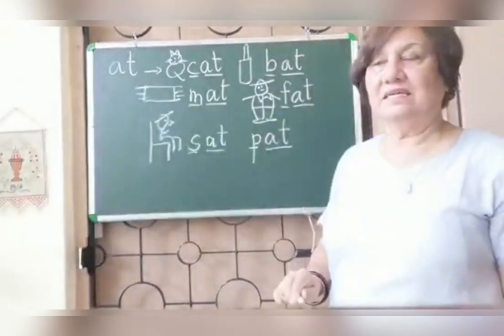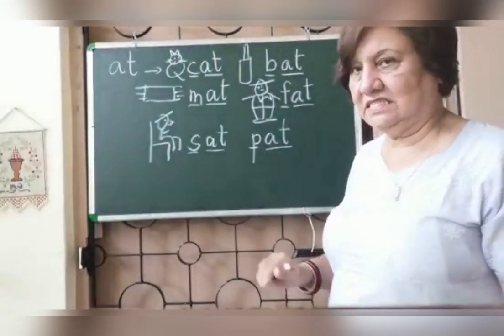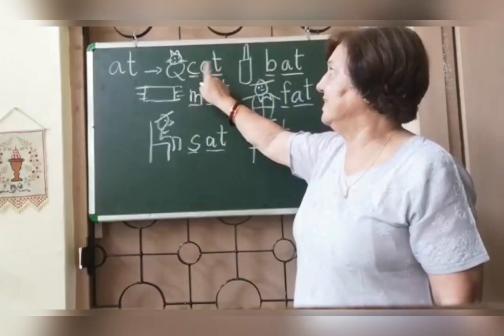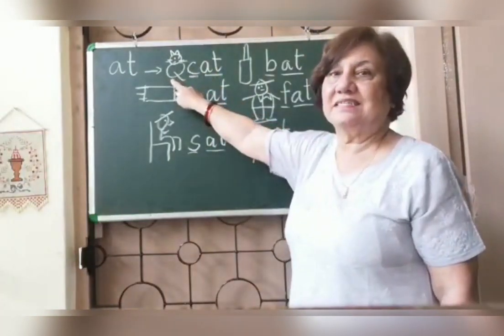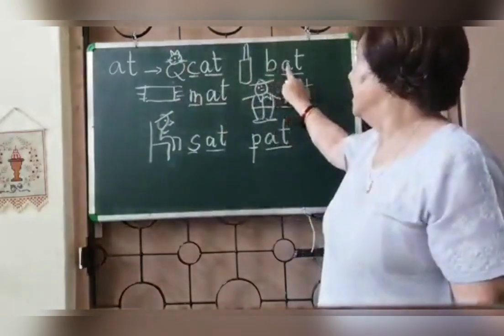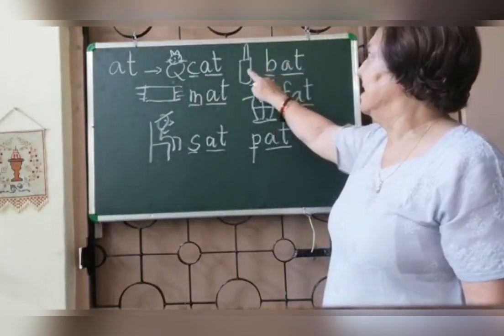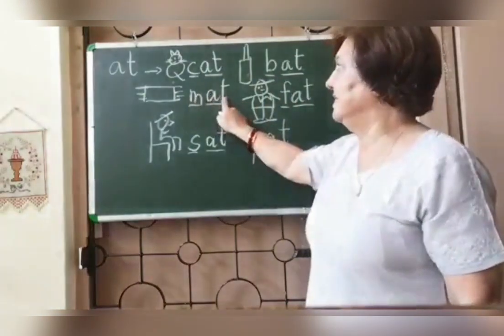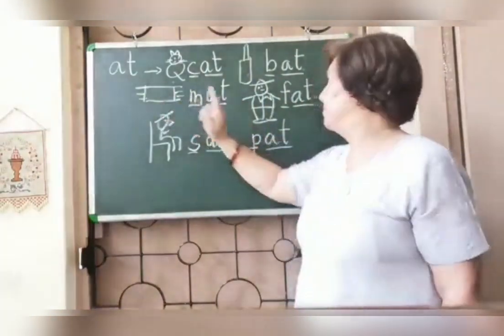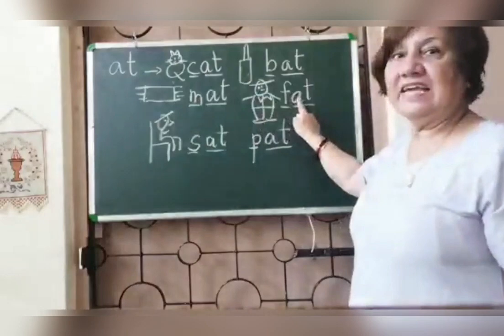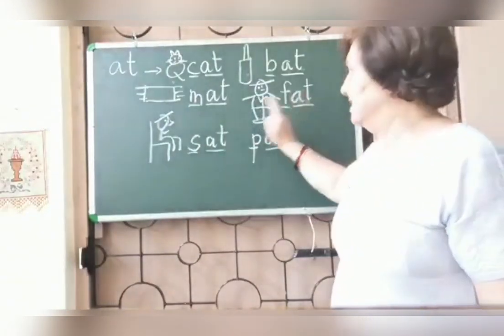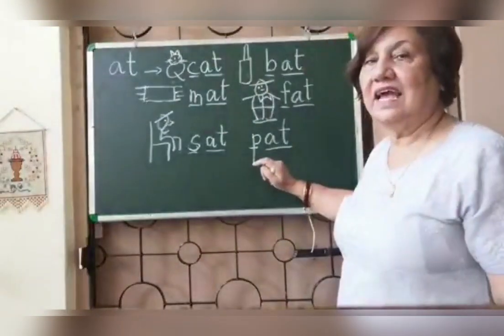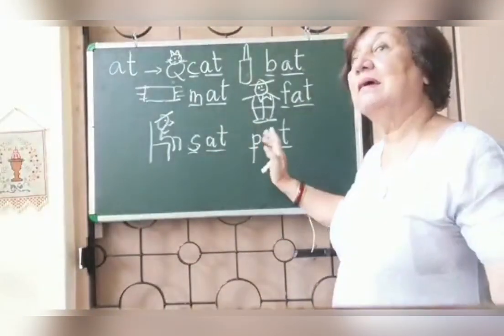Let's revise all our -at words: C and at — cat. B and at — bat. M and at — mat. S and at — fat. S and at — sat. And P and at — pat.